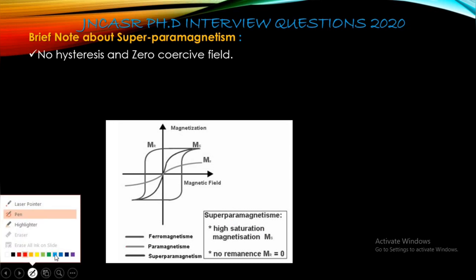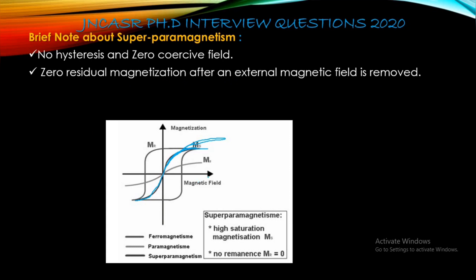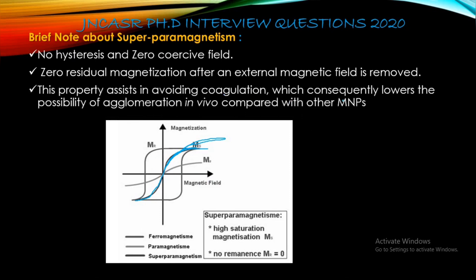For paramagnetism, this is the M versus H graph. For the B versus H curve, the saturation will slightly increase compared to the M versus H curve. There will be no hysteresis loop for superparamagnetism — the coercivity is 0 and the residual magnetization after the external field is removed is also 0. The susceptibility of a superparamagnetic particle is much higher than that of a paramagnetic particle.